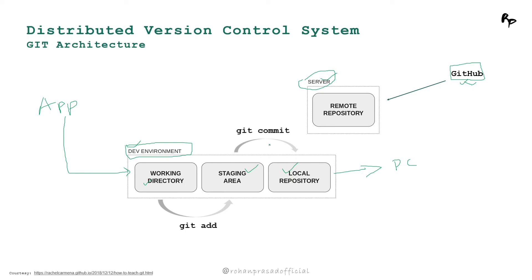From the staging area, if you do 'git commit' with a message using the -m flag, you push those staged files to the local repository. This staging area is a very important area. Various operations like git rebase, git merge, and git branching all revolve around this staging area. Once everything is in your local repository, you can push it to your remote repository.